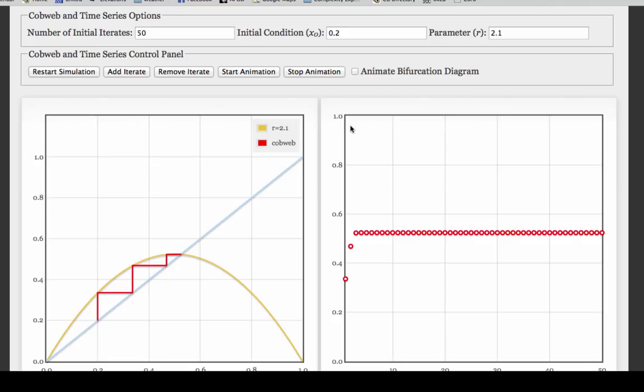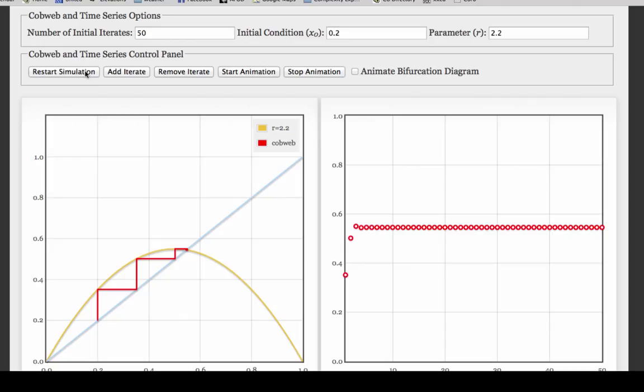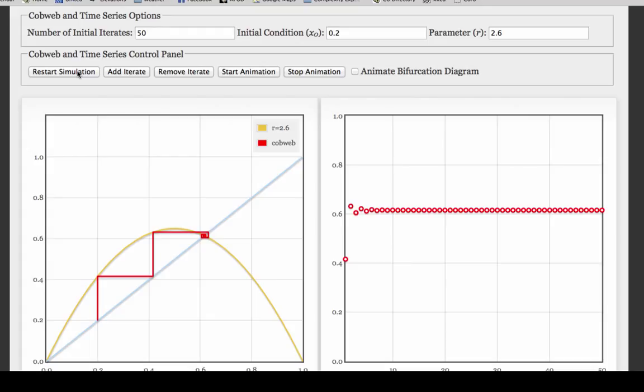You also probably recall, if we increase r further, say to 2.2, you start seeing a little bit of overshoot. Let's increase r a little bit further to make that even more pronounced. There's r equals 2.6, and you can really see the oscillatory convergence on the right-hand side.